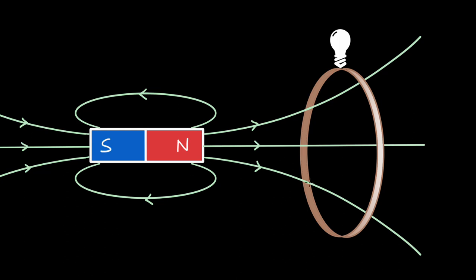Now if there is induced current in the coil, that means the electrons are moving, and it is the Lorentz force — given by QV cross B — which provides the force for the electrons to move.